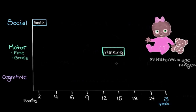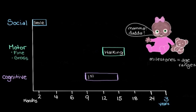For our cognitive category, we have the first word — that's a pretty exciting one. A word like 'mama' or 'dada.' We would expect that to come out somewhere between about nine months and 15 months. So these are just a few examples of some of the milestones that we know about — a snapshot of what normal development looks like.